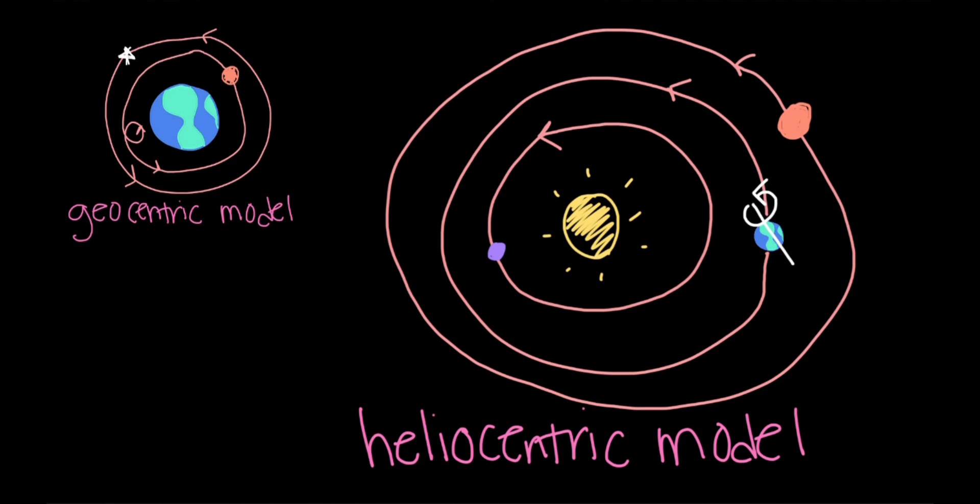It's important to remember that while the heliocentric model does a better job of explaining and predicting our solar system, which is what we want models to do, it is still a model and not a perfect recreation of reality. For example, while the heliocentric model considers the Sun as stationary, we know now that the Sun is actually just one star of many billions orbiting the center of our own galaxy. And so the Sun, along with the rest of the solar system, is in fact moving.